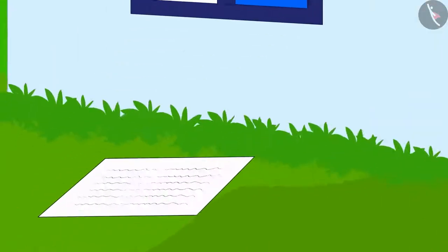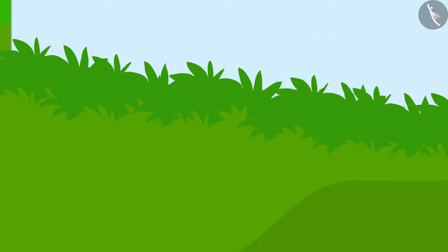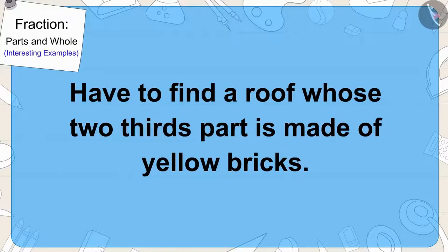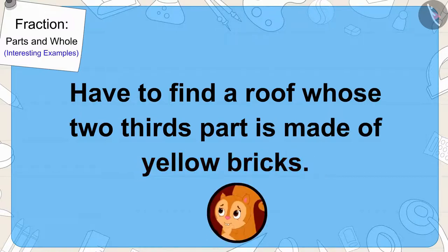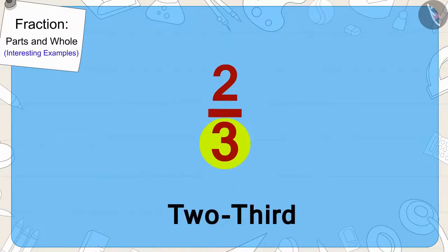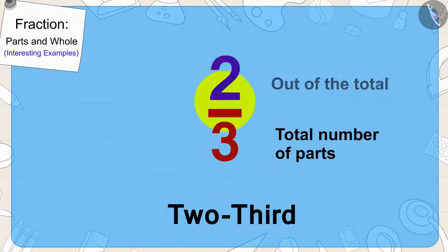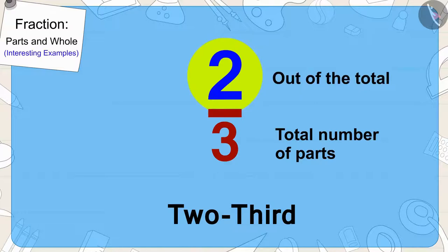Chanda found her next clue under this window. It was written in that clue that she would have to find a roof whose two-thirds part is made of yellow bricks. Children, can you tell what kind of roof it will be? It will be a roof which is divided into three equal parts and two parts of it would be made of yellow bricks.